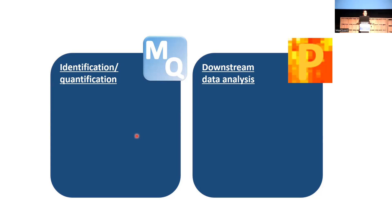Now let's talk about Perseus. Perseus is responsible for the downstream data analysis. As input, it takes TXT files - for example, the files that MaxQuant gave you, but of course it can be any tab-separated file; it doesn't have to be the MaxQuant output tables. You do the downstream data analysis and can have TXT files exported or plots made.